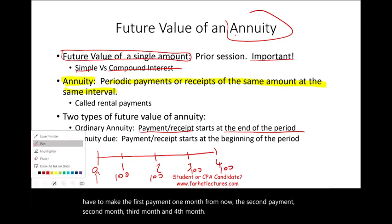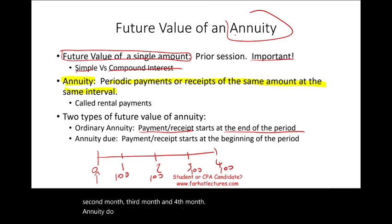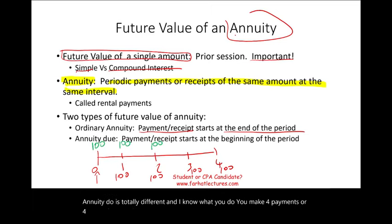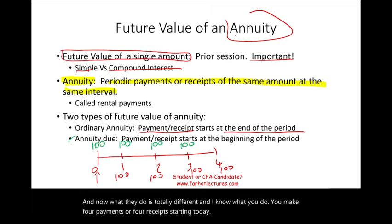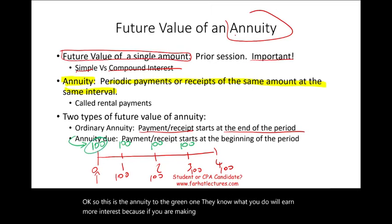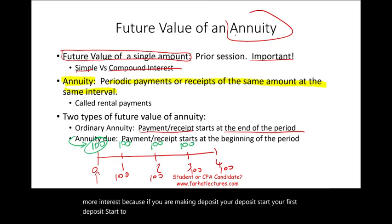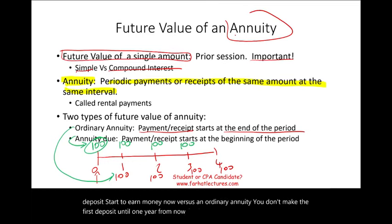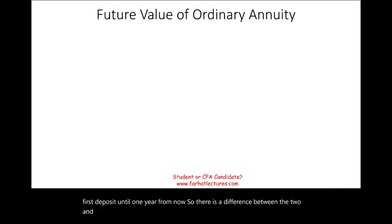Annuity due is totally different. In annuity due, you make four payments or four receipts starting today. The annuity due will earn more interest because if you are making deposits, your first deposit starts to earn money now — versus an ordinary annuity, where you don't make the first deposit until one year from now. So there's a difference between the two, and we'll discuss those later, starting with the future value of an ordinary annuity.